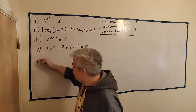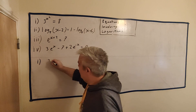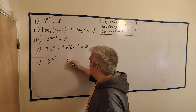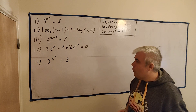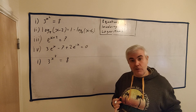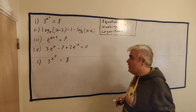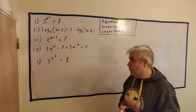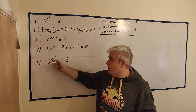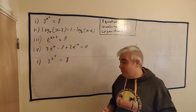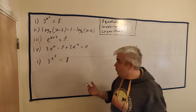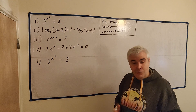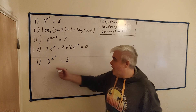Part one is simple enough. Three to the power of x squared is equal to eight. We now have a tool — logarithms — and we can go ahead and solve this. Before, we would have had to guess what number could be up here to make eight. Unfortunately it's not a nice number; it's somewhere around 1.9.